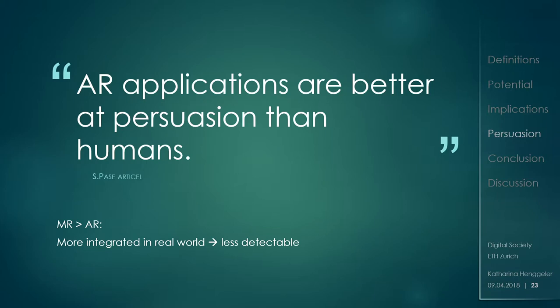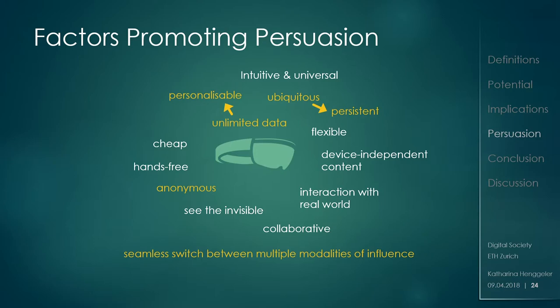Mixed reality is even better at persuasion than augmented reality because it's more integrated — you cannot distinguish it as easily. It's ubiquitous, it's always there, so it's very persistent: it can remind you all the time to buy something now, while a human persuader would have already given up. It's personalizable and it collects your data, so it can adjust to how you think, feel, and what your interests are. And it's anonymous — you cannot argue back against it because it doesn't give you an answer, it just focuses on what it has to say. Because it's personalizable and always there, it can seamlessly switch between multiple modalities of influencing you.